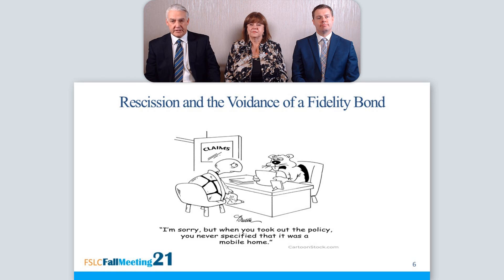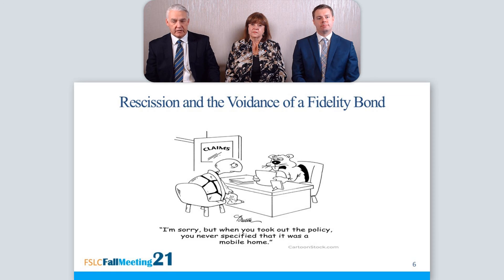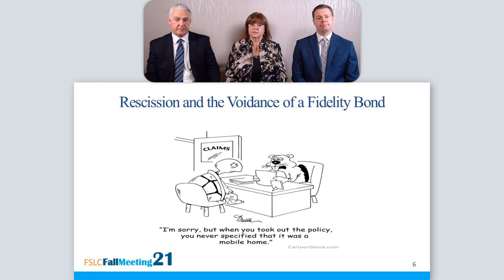In order to have a successful rescission claim, it needs four elements. There must be an application. There must be a material or untrue statement in the application. That statement must be material in that it must affect how the insurance underwriter looked at the risk — for example, would the underwriter have priced the risk differently if he or she had known the truth? And lastly, the material misrepresentation must be relevant to the issue at issue in the coverage matter.